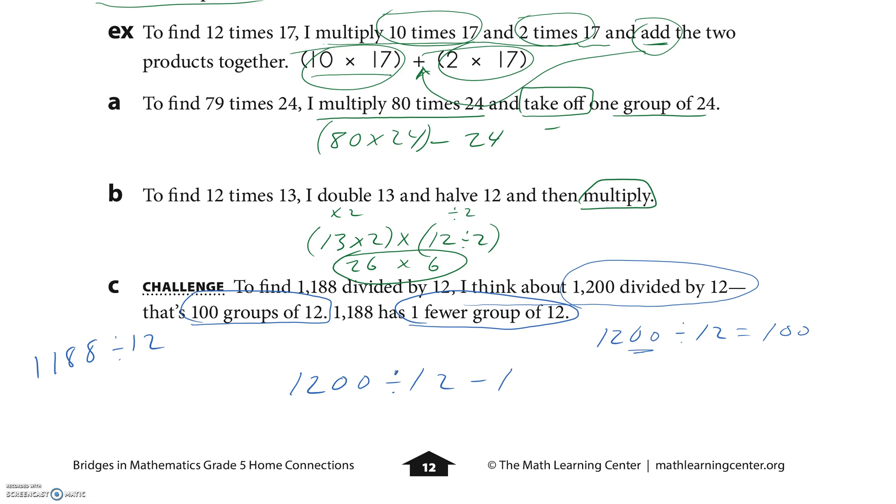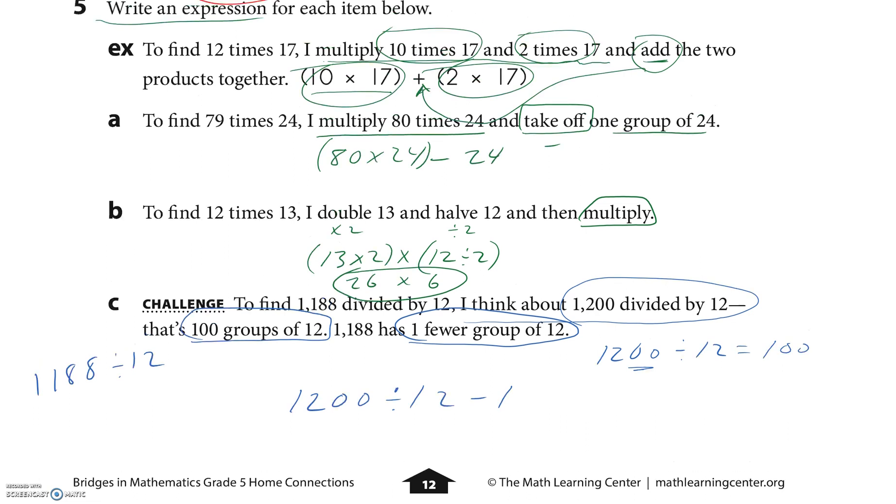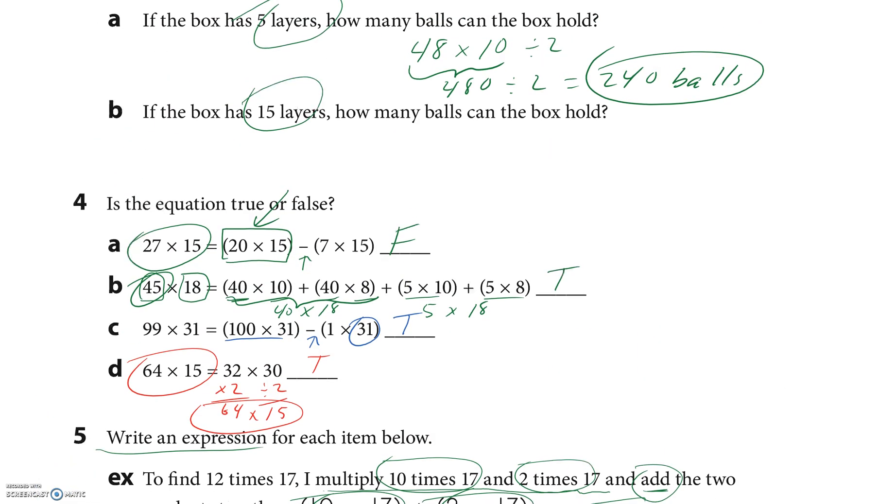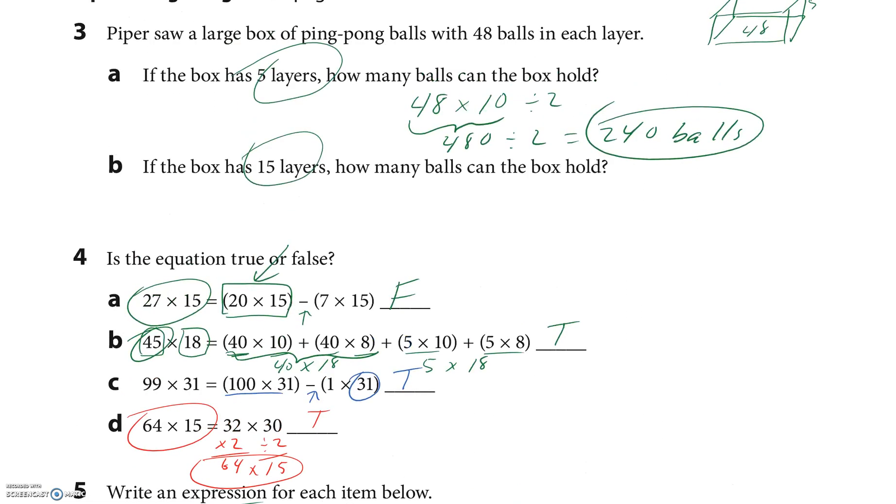I told you I'd answer this one right here. I only have a few seconds left in my video, so if this box was 15 layers, well, 5 layers was 240, so here's 10 layers, here's 15 layers. I could do that times three, or I could just add them up.